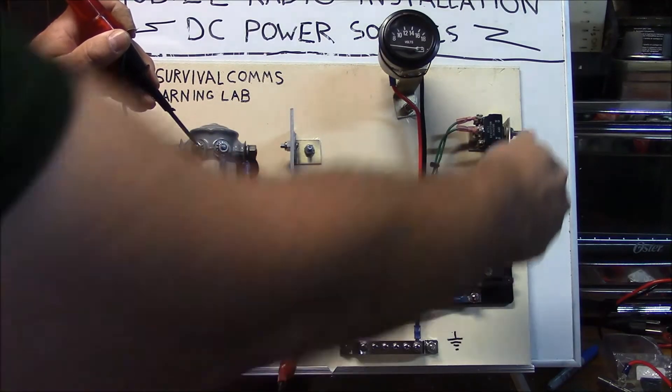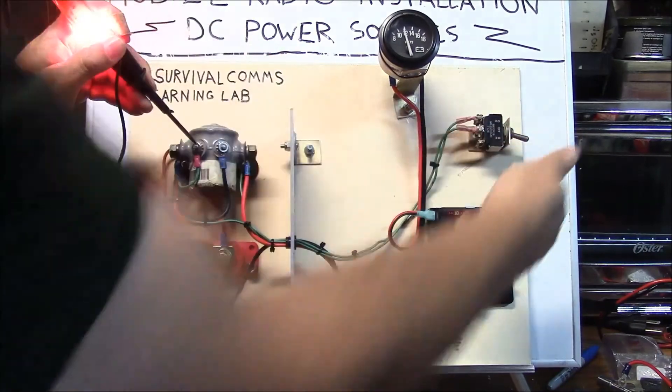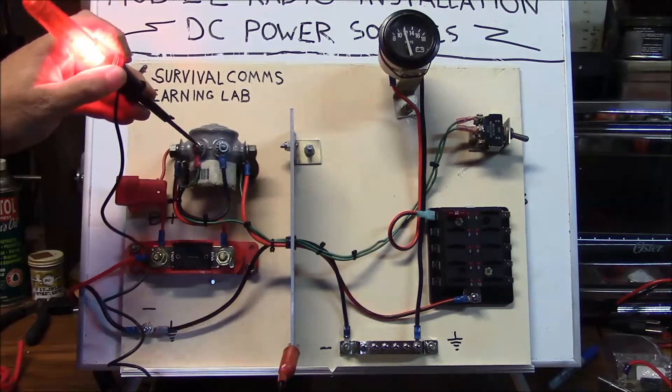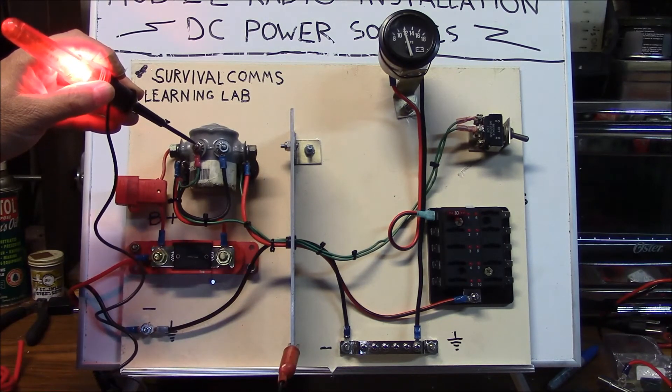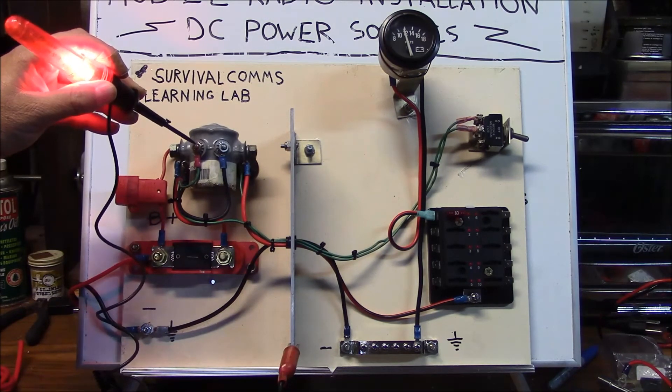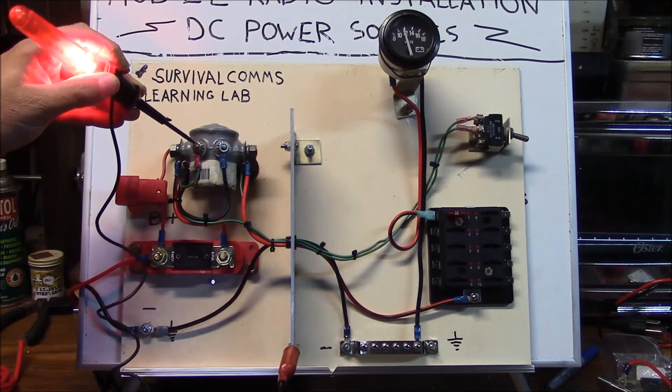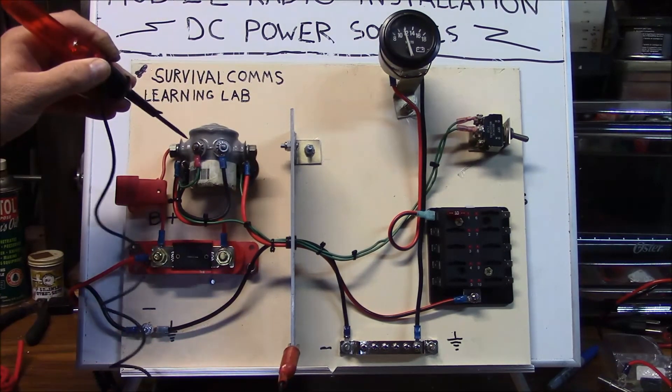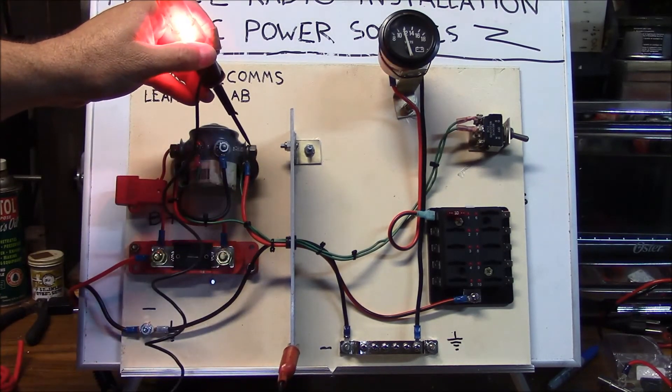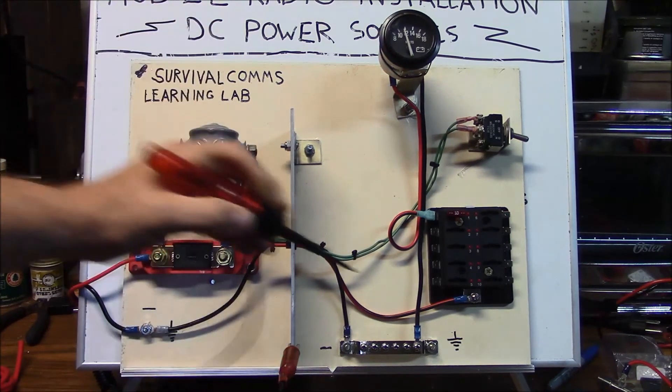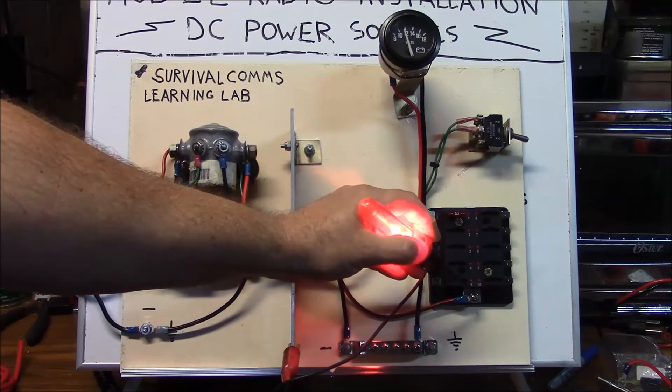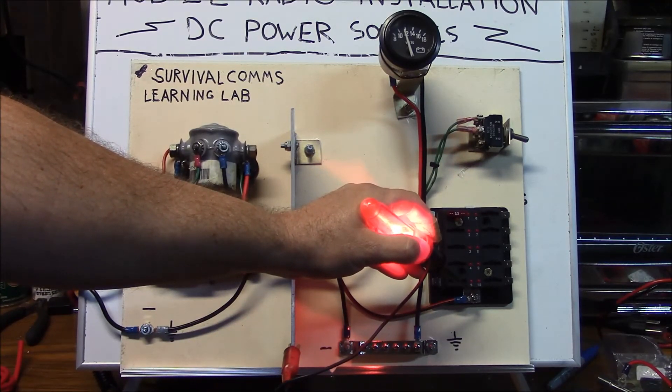When we arm our relay, you can see that power is delivered from the switch to this side of the coil, energizing the coil, closing the contacts within the relay and providing power through said relay, which feeds our interior DC distribution panel.